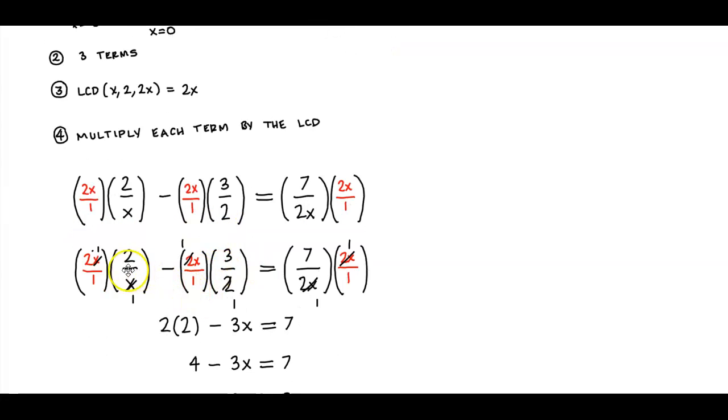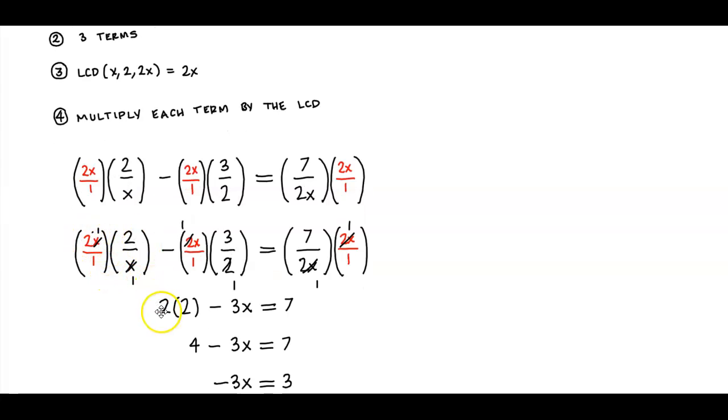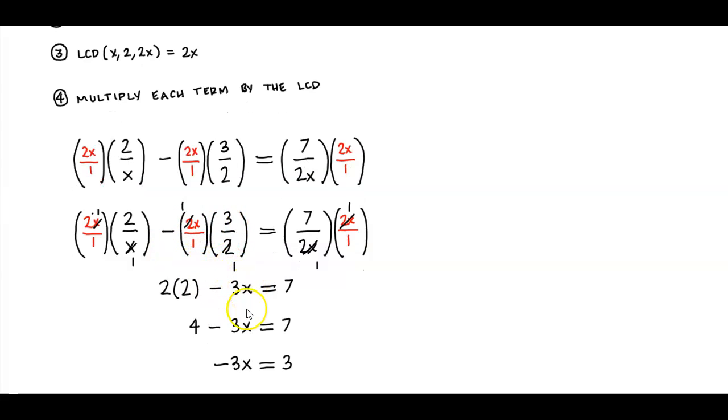We're going to simplify what we can simplify with the denominator. Now x goes into x one time, so we have 2 times 2. We can see that 2 goes into 2 one time, so we get minus 3 times x. Equals, we have 2x goes into 2x one time, so that's 7 times 1.